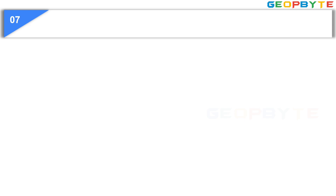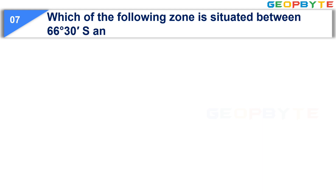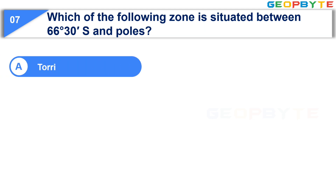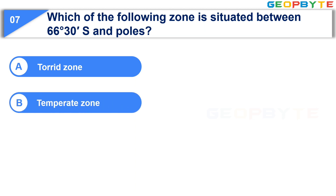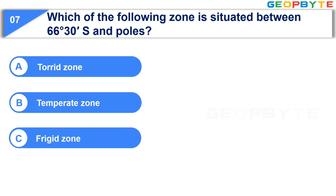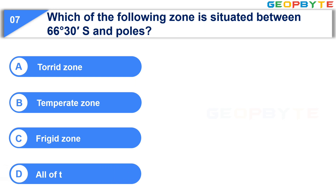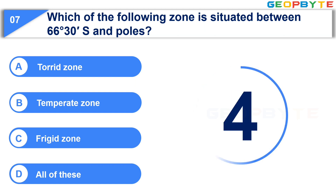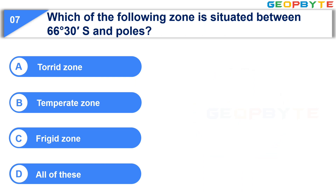Let us see the seventh question. Which of the following zones is situated between 66 degrees 30 minutes south and the poles? Option A: Torrid zone. Option B: Temperate zone. Option C: Frigid zone. Option D: All of these. Your time starts now. Your time is up and the correct answer is Option C: Frigid zone.